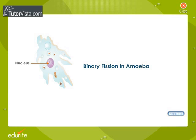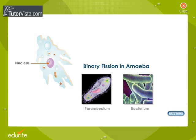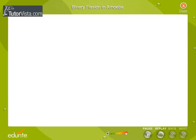Binary fission is the most common method of reproduction in amoeba, paramecium, and bacterium. During this process, two daughter organisms of equal sizes are formed from one parent. Let's observe the process of binary fission in an amoeba.